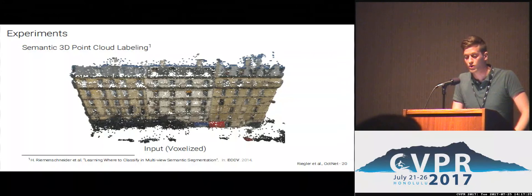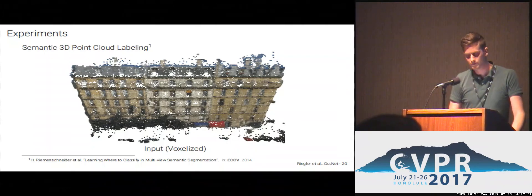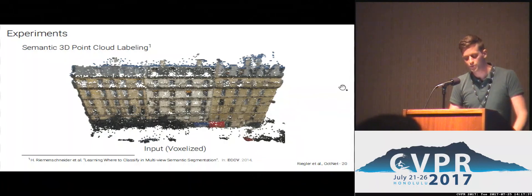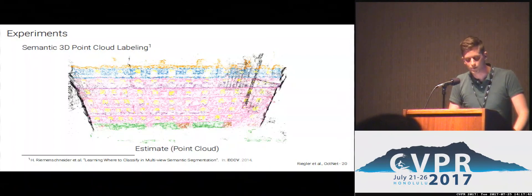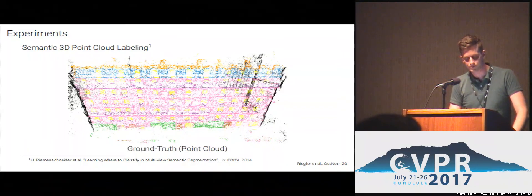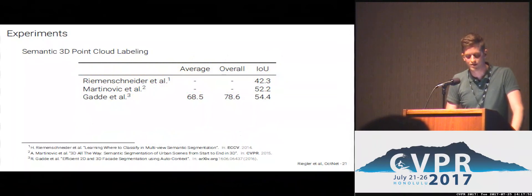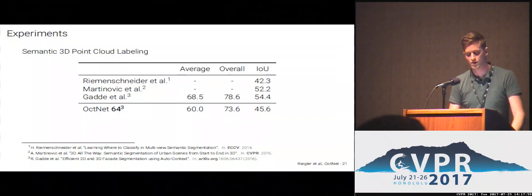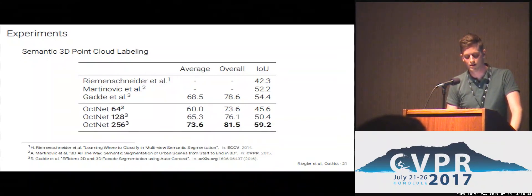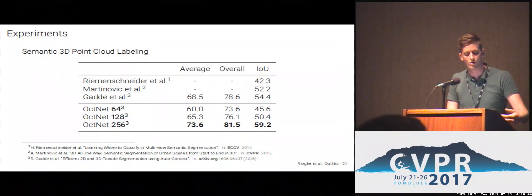The final task we examined was semantic 3D point cloud labeling, where the input is a color 3D point cloud that we voxelize to feed to our network. The output is a semantic label for each voxel, which we back-project to the point cloud and compare to the ground truth. Evaluating on the Varicity dataset, as we push to higher input resolutions, we get much better accuracy, and an input resolution of 256³ is needed to get state-of-the-art results.